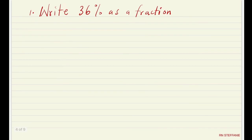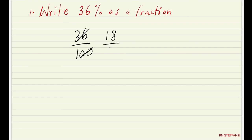For the next example, write 36% as a fraction. Remove the percent sign to get 36, then put it out of 100. Now reduce: 2 goes into 36 eighteen times, 2 goes into 100 fifty times, giving 18 over 50. We can still reduce again — always check if an intermediate simplification appears in the answer choices for multiple choice. 2 goes into 18 nine times, 2 goes into 50 twenty-five times, so the lowest term is 9 out of 25. That means 36% as a fraction is 9 out of 25.